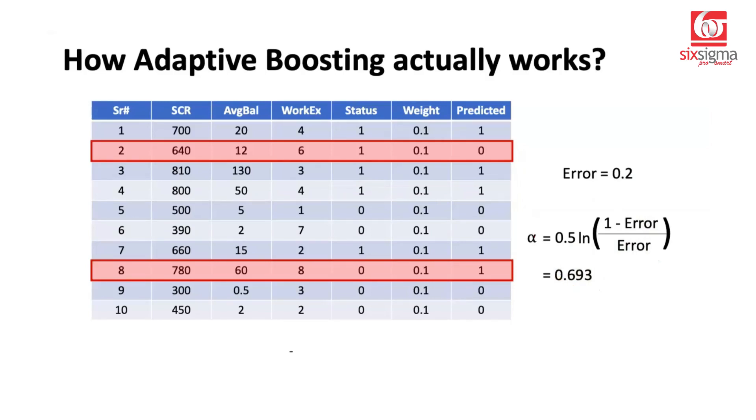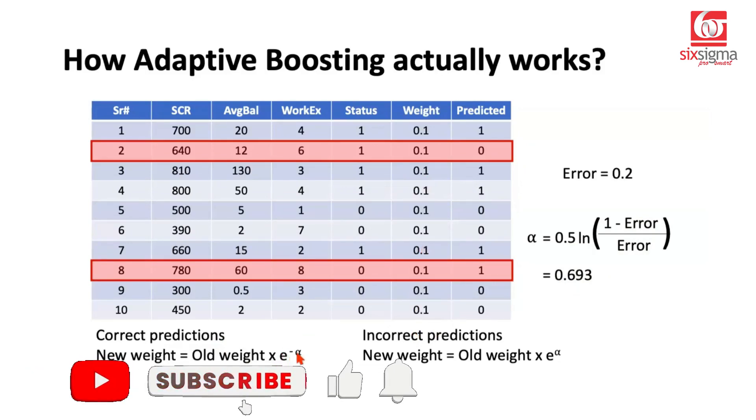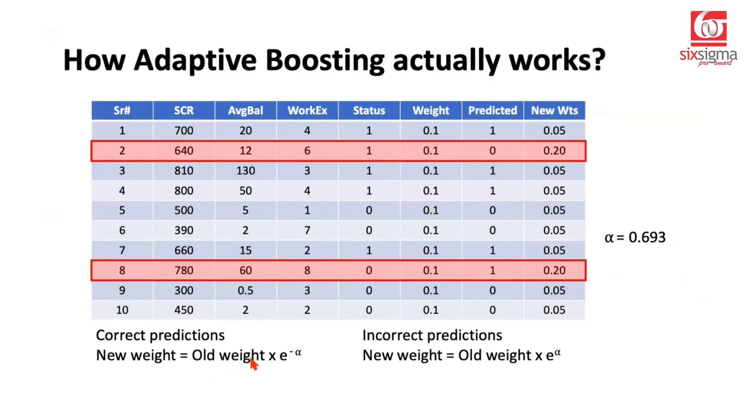Now how do we derive the weight to be assigned to the records? There is a logic that's followed for that purpose and the logic is simple. For correct predictions we are going to take the old weight, which in our case was 0.1 across, and multiply it by e raised to the power negative of alpha. E is Euler's constant which is 2.718. Alpha is something that we computed here. So which means we are giving relatively less weight to the correct predictions. But for the incorrect predictions, if you see, there is a change in sign here. What used to be negative alpha has become just alpha here. So we are emphasizing on giving a higher weightage to incorrect predictions using this logic.